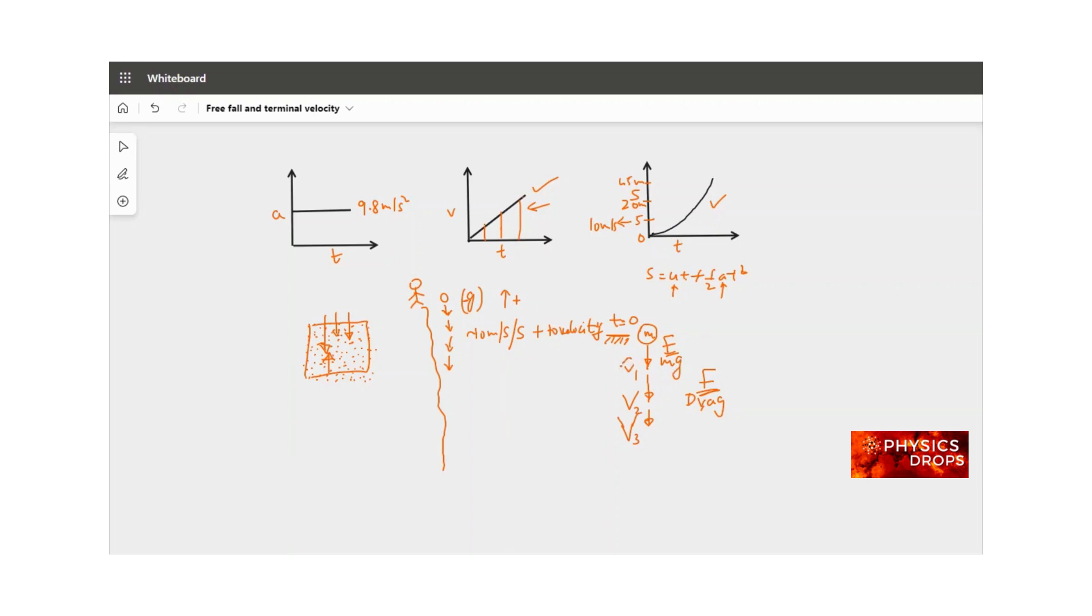What happens initially? We discussed that v1 is going to be less than v3 because as time progresses, velocity increases due to acceleration due to gravity adding to the velocity.